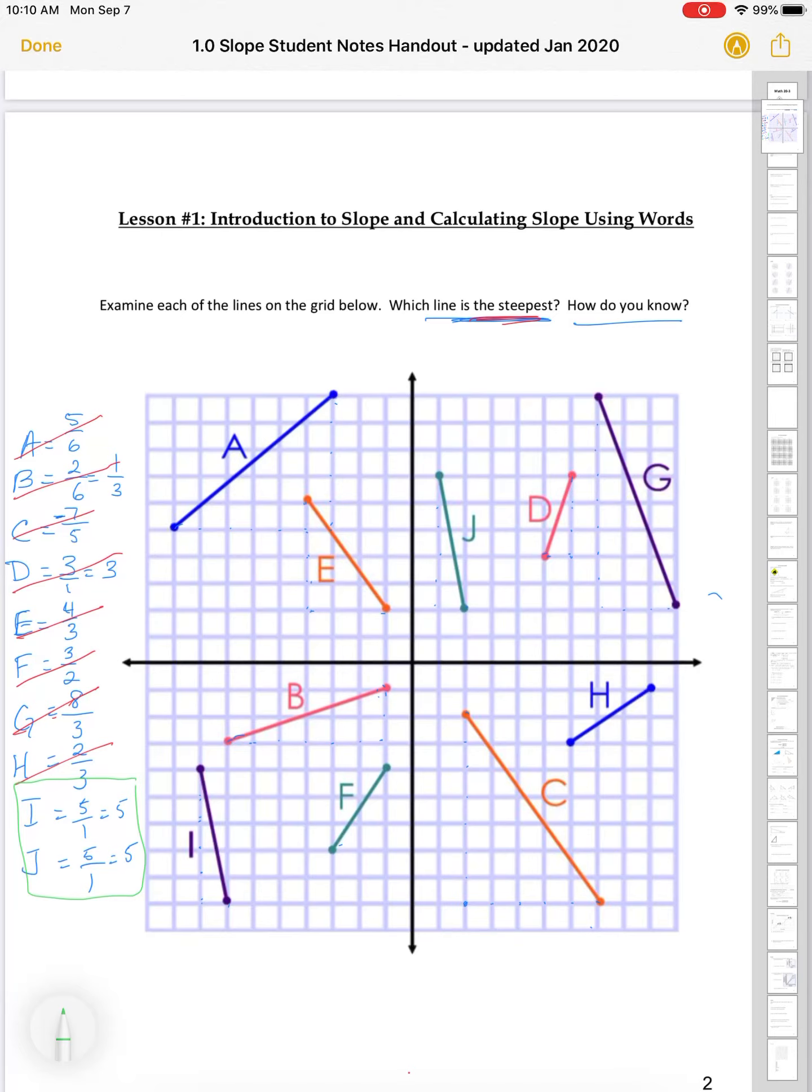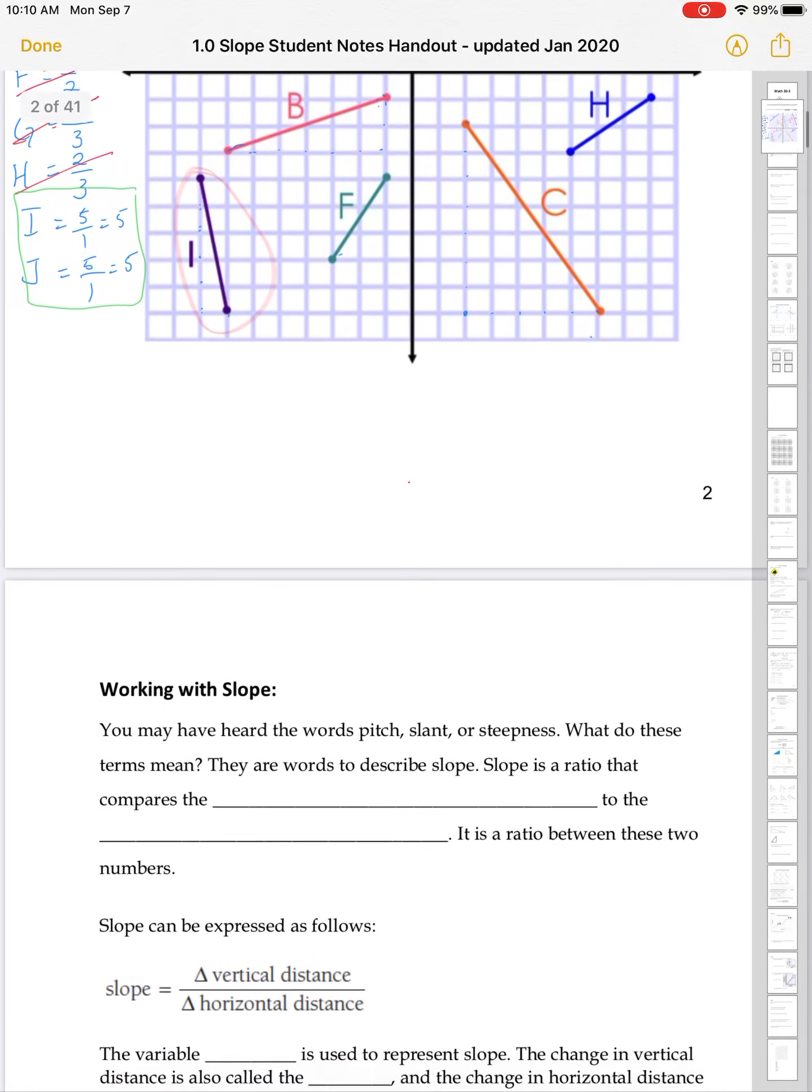So, I and J would be our steepest lines. Now, beyond doing that math work, just looking at them, there's a number that I would kind of look at and say, I think those ones probably are the ones I'd be considering. Certainly, J looks very steep. G looks steep. I looks steep. Even D looks very steep. So, just looking at them compared to some of the other lines, those, I would say, are amongst the steepest.